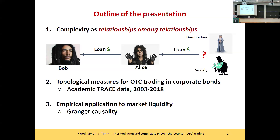What I'm going to do in the talk is three things. First, I'm going to give you the broad intuition for how we're thinking about the problem. Then we're going to take the broad intuition to the specifics of the corporate bond market and look at how you might implement these ideas in that context. Finally, we're going to take those measures of complexity in the corporate bond market and try to connect them to market liquidity and see if there is any financial empirical content to what we're doing. The gist of the intuition is that complexity emerges from relationships among relationships in network systems.